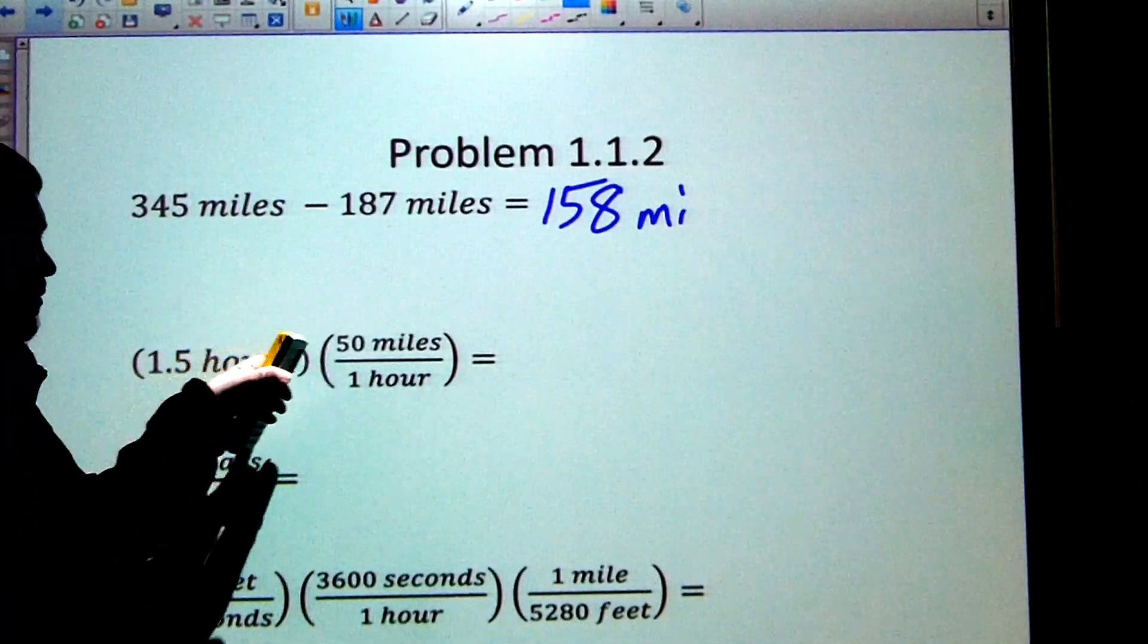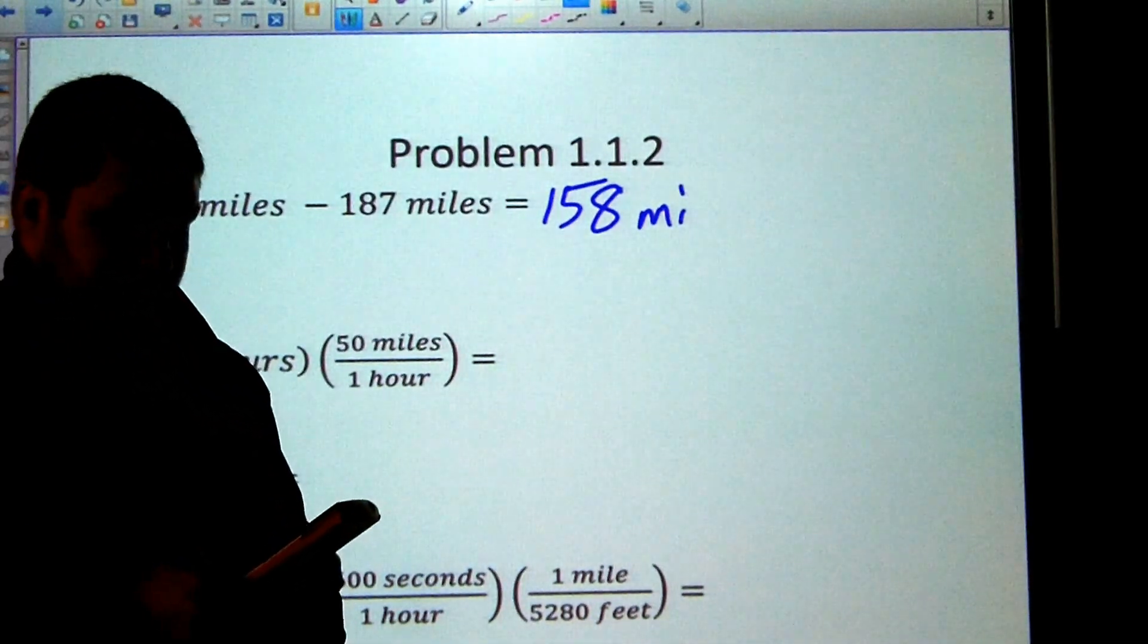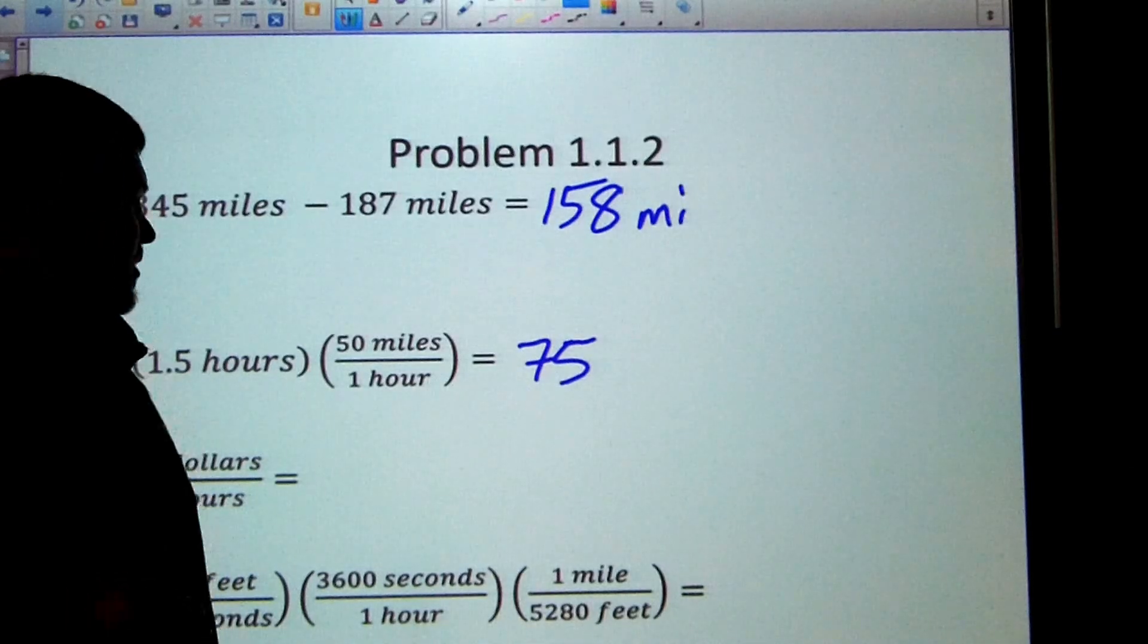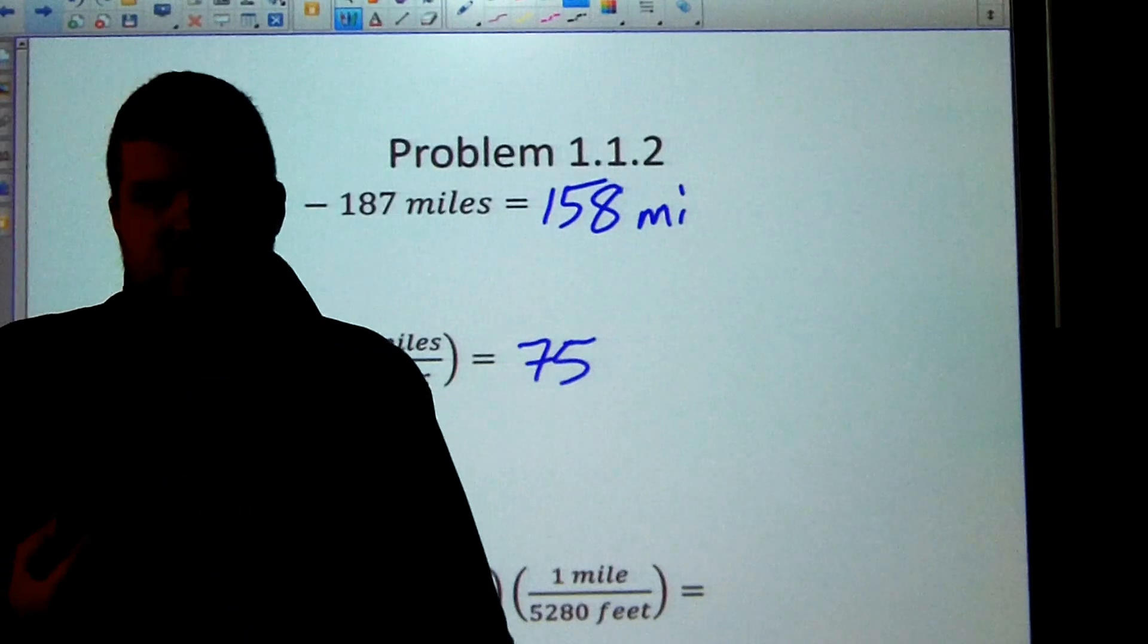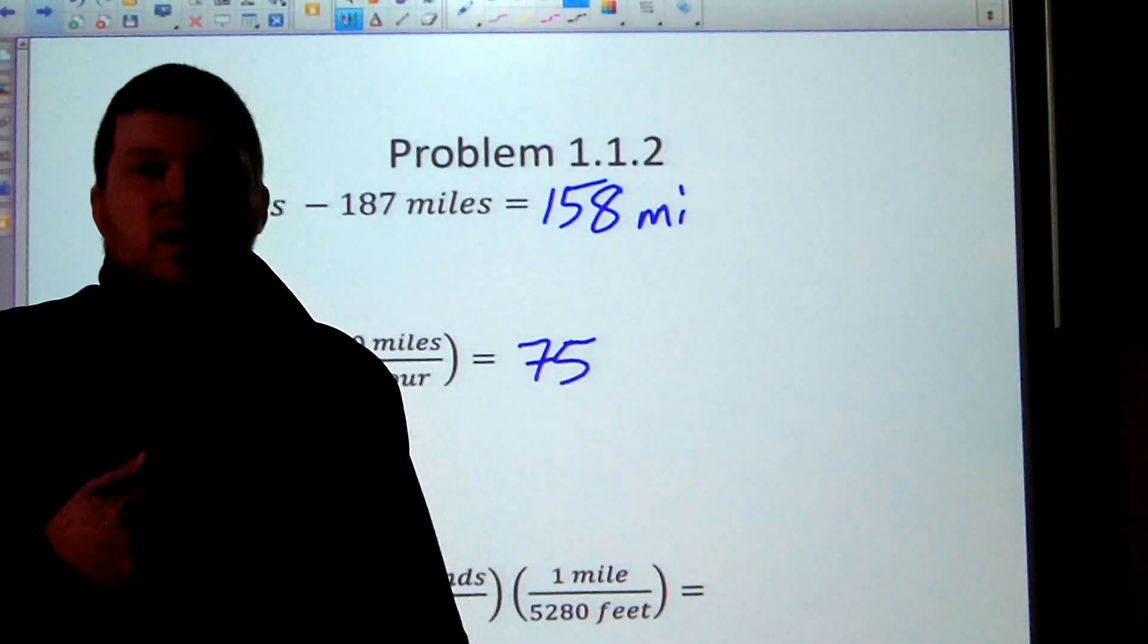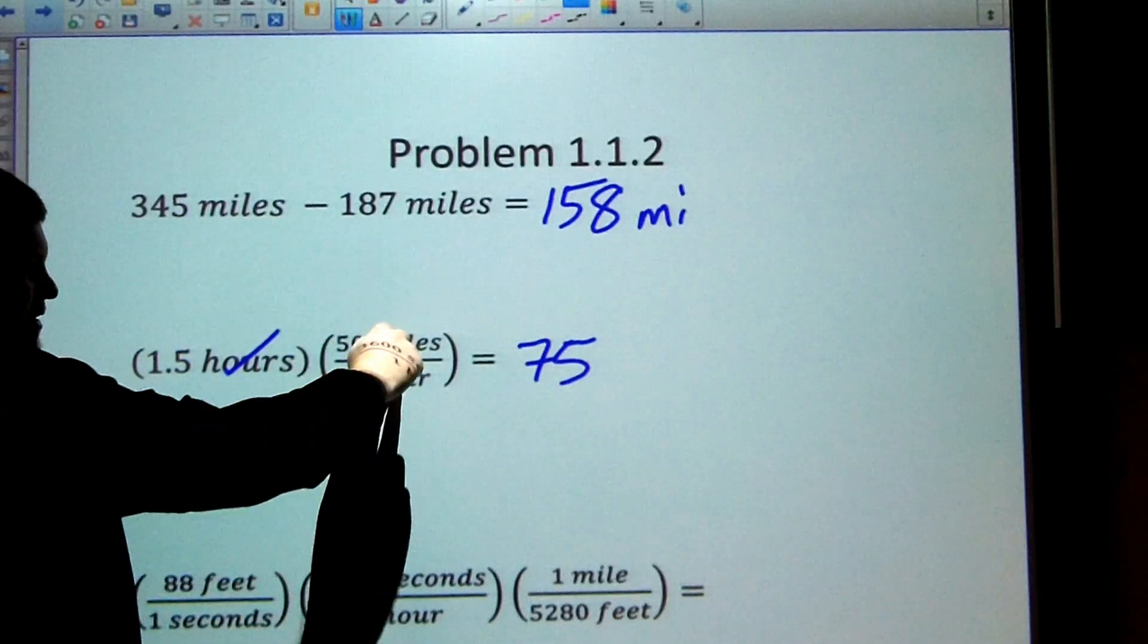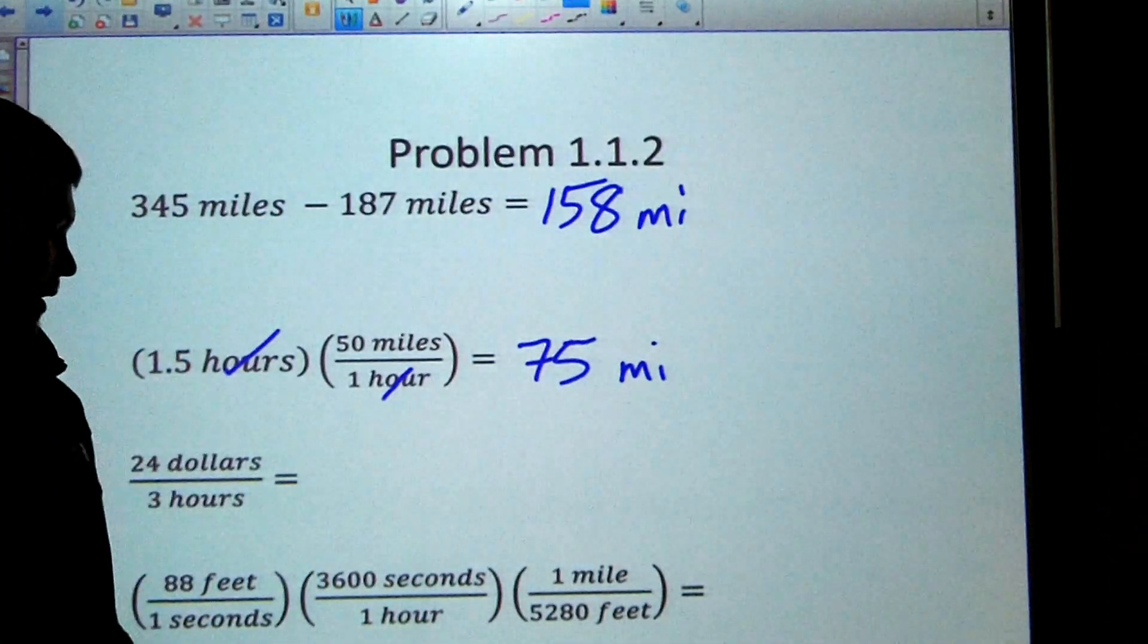All right. So here, I've got, all right, well, I'm going to take care of my numbers first. So 1.5 times 50, which is 75, but now I need to take care of my units. Well, I have hours up top, hours on bottom. So just like if we had two on top, two on bottom for a fraction, we would know we'd just get one. Those twos cancel each other out. Same thing with the hours. Hours up top, hours on bottom cancel out. All that's left over is miles. So this is 75 miles.